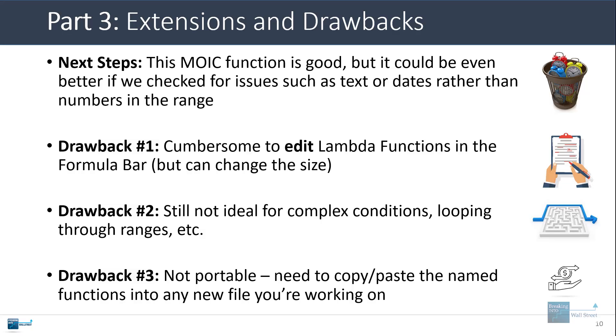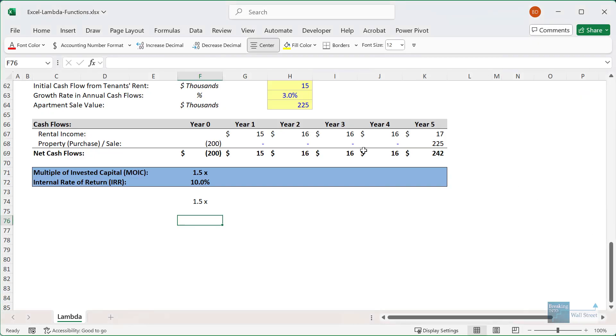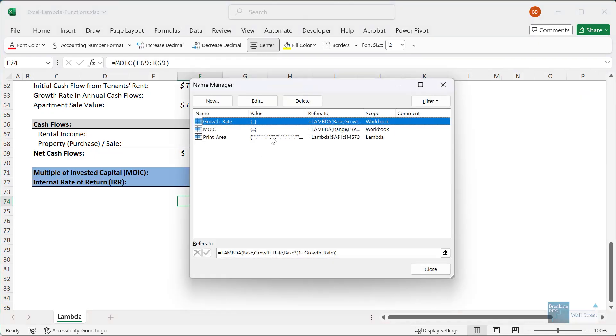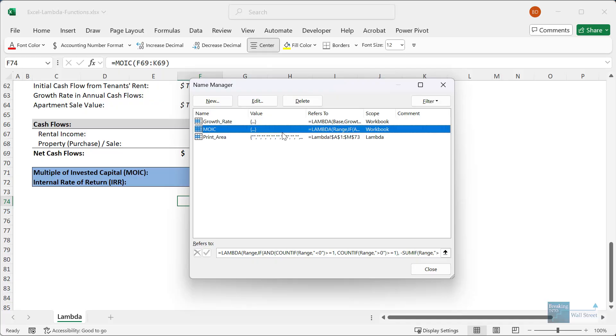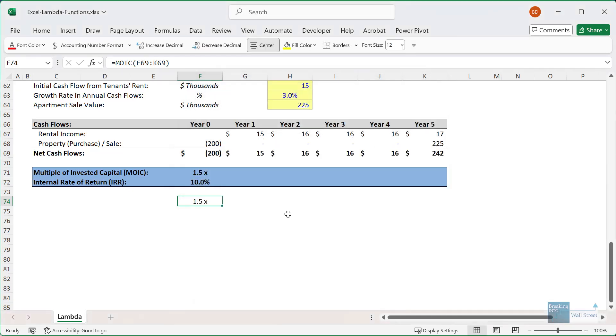And then the third drawback is that lambda functions are not easily portable. What I mean is that if you create a function in this file, it's always going to be linked to this file. So if you open a new file or you're working on a new model, you have to go in and take everything that you created in the name manager and go into all the commands here, copy and paste them and transfer them over to the new file like that. So it's a bit different from something like importing the quick access toolbar in Excel, or importing a macro package where that just takes effect at the Excel program level. Lambda functions are linked to specific files, which makes them a bit more difficult to use and require some setup time when you open a new file or start working on some type of new file.